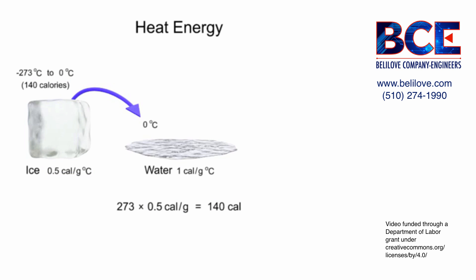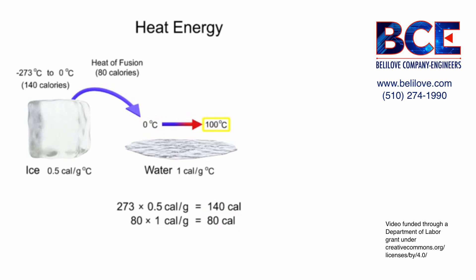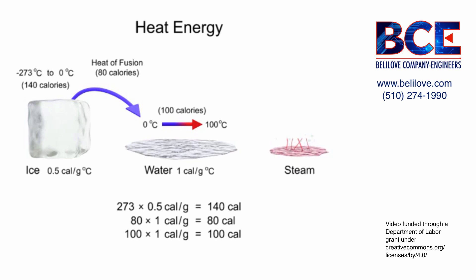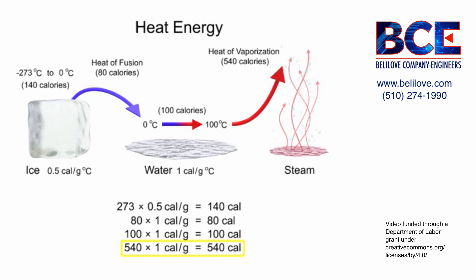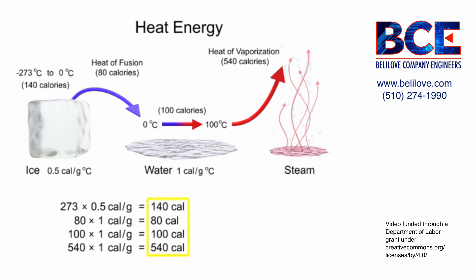The phase change of 1 gram of ice to liquid water requires 80 calories. Then, to heat the water from 0 degrees Celsius to 100 degrees Celsius with a heat capacity of 1 calorie per gram would require 100 calories. The final phase change of 1 gram of boiling water to steam would require an additional 540 calories. Adding all of these values together yields 860 calories, the amount of heat energy it takes to transform 1 gram of ice at absolute zero to steam.